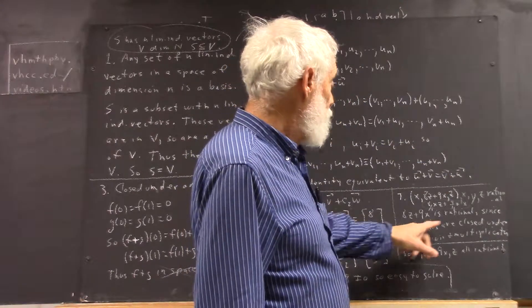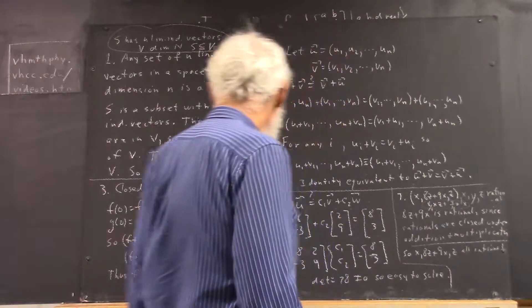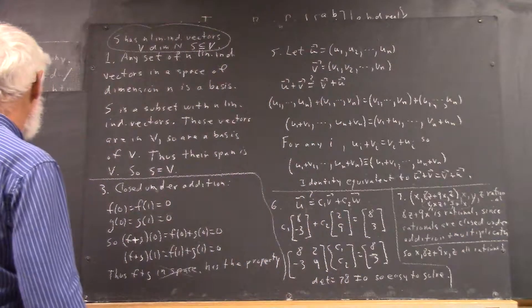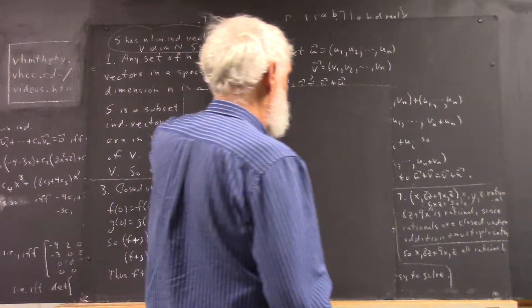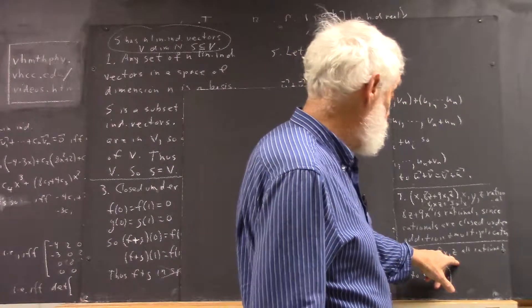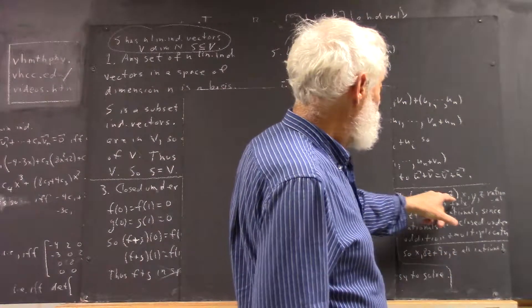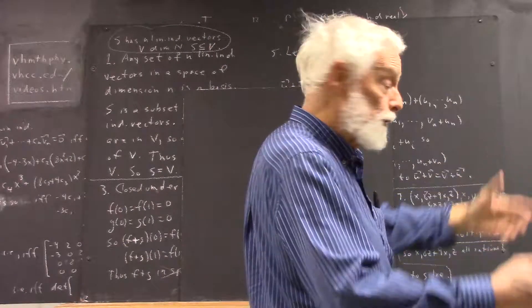Well, 8z plus 9x is rational since rationals are closed under addition and multiplication. But we might want to say just a little bit more about rational numbers. And it then follows that all three of these are rational, so that this is in the space that consists of triples of rational numbers.